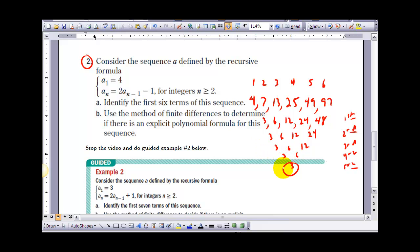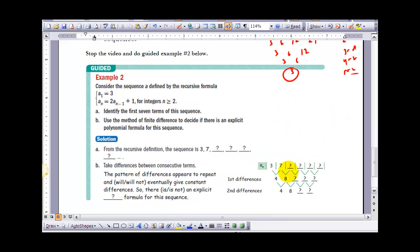The pattern of differences just seems to repeat. We would say that there is not a polynomial that would fit this data. Then I'd like you to just stop the video at this time and do the guided example number 2 here below and see if you can complete that and then I'll put the answers up for that in just a minute.